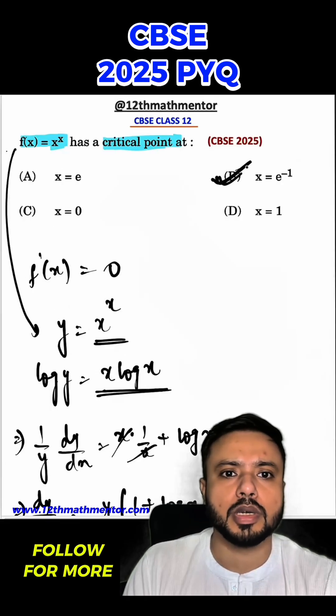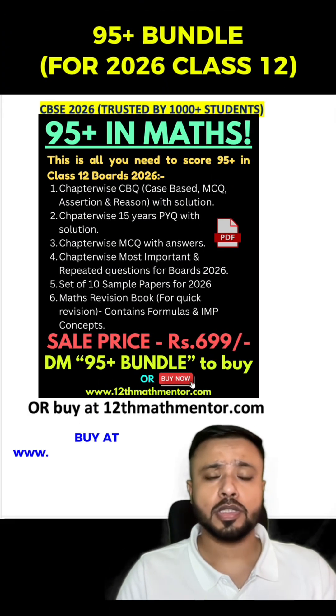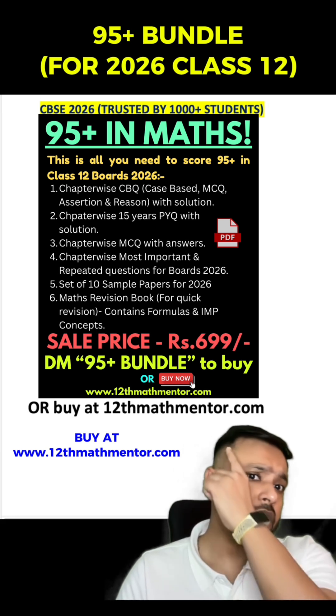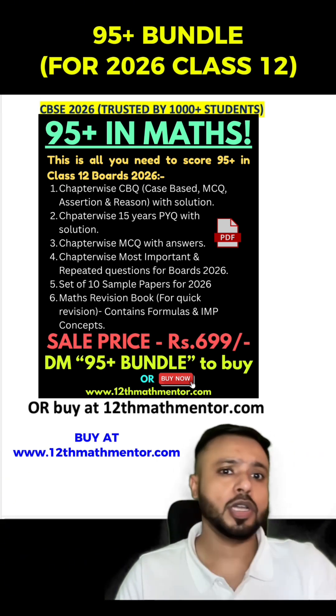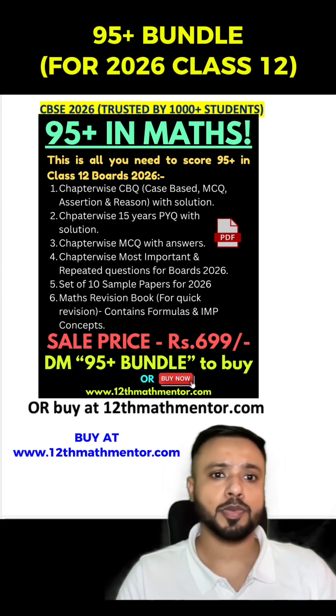to the power -1. So option B is the correct answer for this question. If you want to score 95+ in your CBSE Class 12 Math board exam, you can buy this 95+ bundle. You can see all the details over here, you can DM me the word '95+ bundle' or buy it directly from my website 12thmathmentor.com.